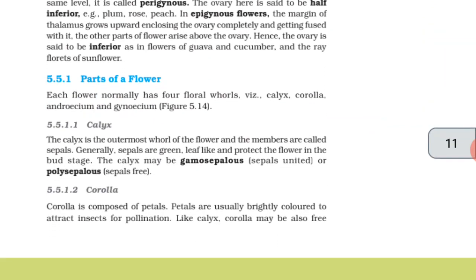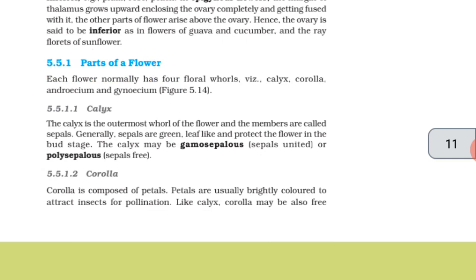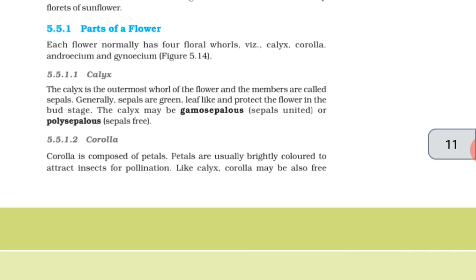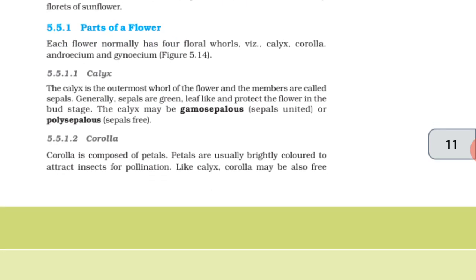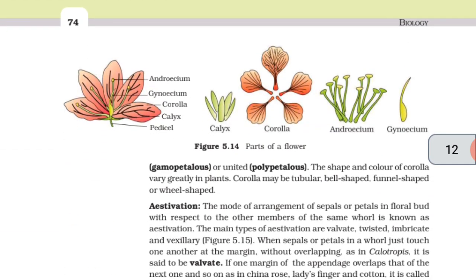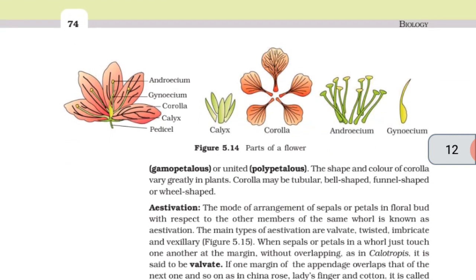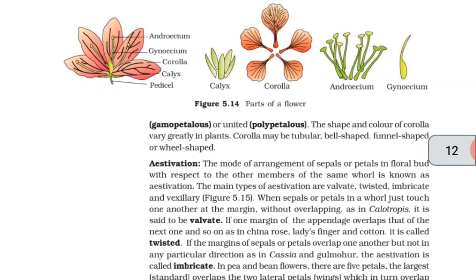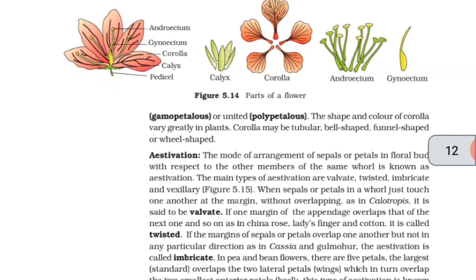Calyx. The calyx is the outermost whorl of the flower and the members are called sepals. Generally, sepals are green, leaf-like, and protect the flower in the bud stage. The calyx may be gamosepalous, sepals united, or polysepalous, sepals free. Corolla. Corolla is composed of petals. Petals are usually brightly colored to attract insects for pollination. Like calyx, corolla may be also free, gamopetalous, or united, polypetalous. The shape and color of corolla vary greatly in plants. Corolla may be tubular, bell-shaped, funnel-shaped, or wheel-shaped.